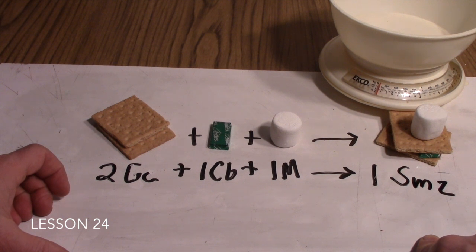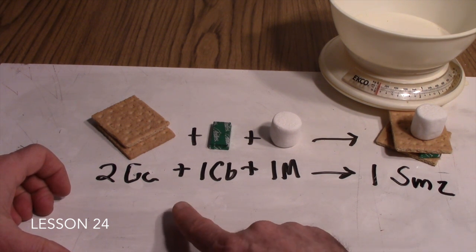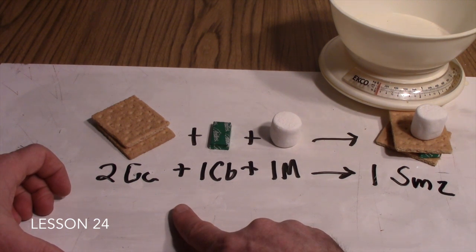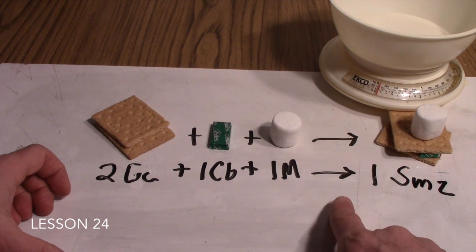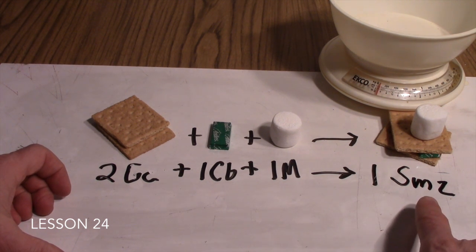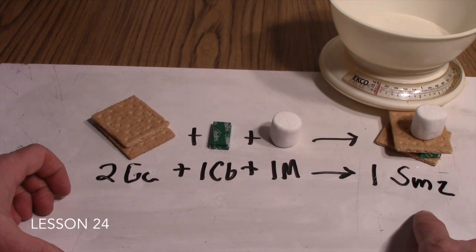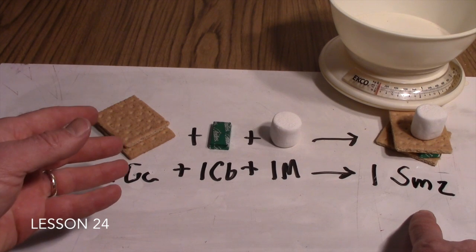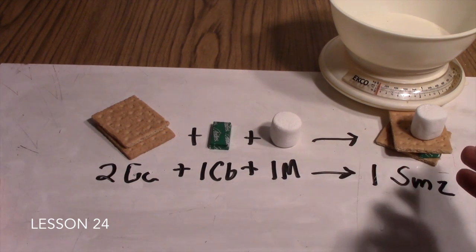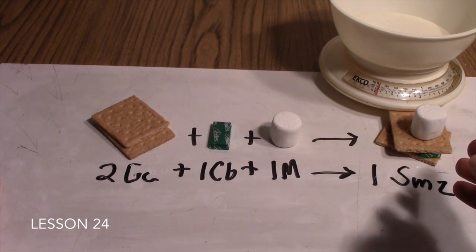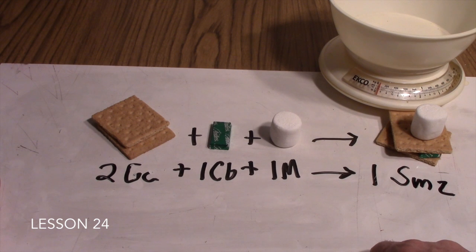Now in Lesson 24, your students will be given a known amount of grams of reactant, and from that known amount of grams, we will be asked to predict a known amount of grams of product. So we are starting in grams and going to grams of product.